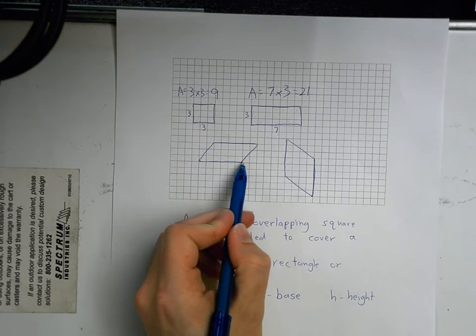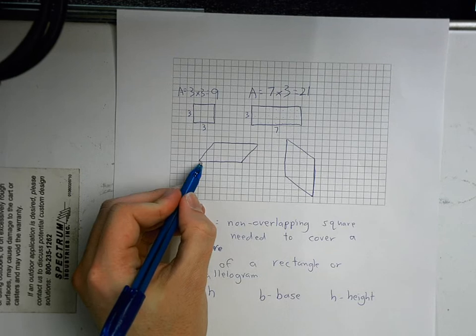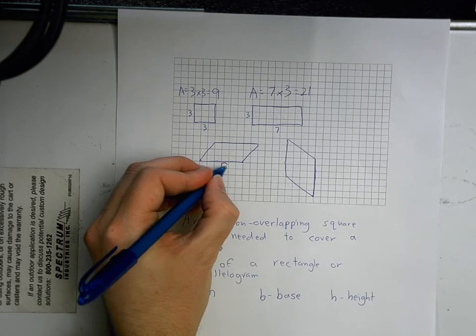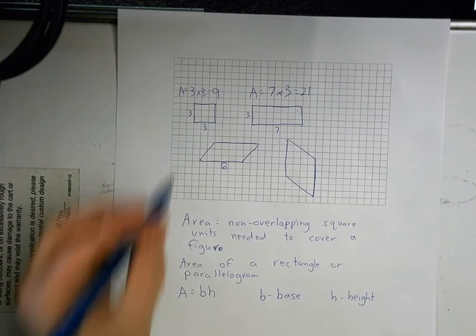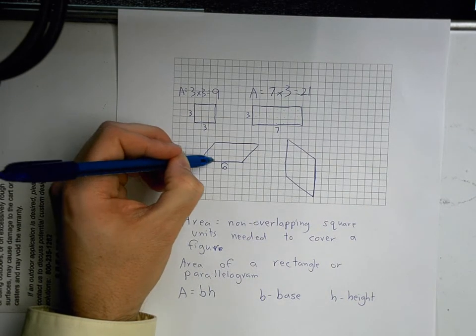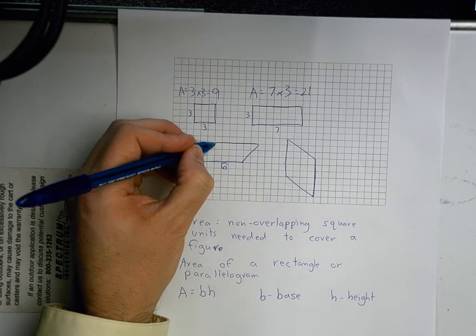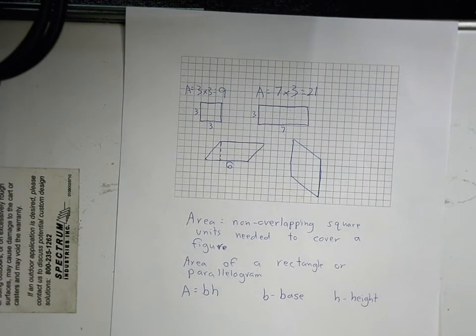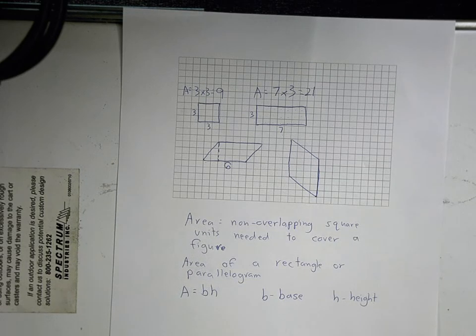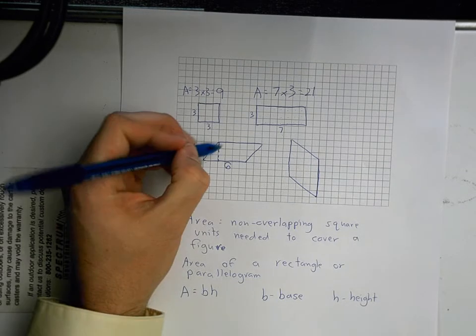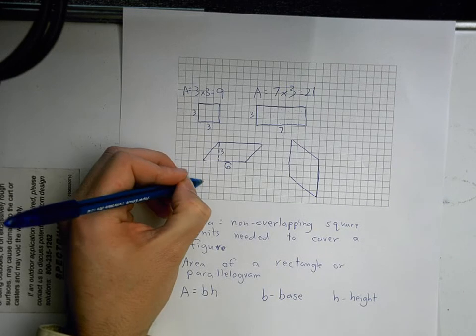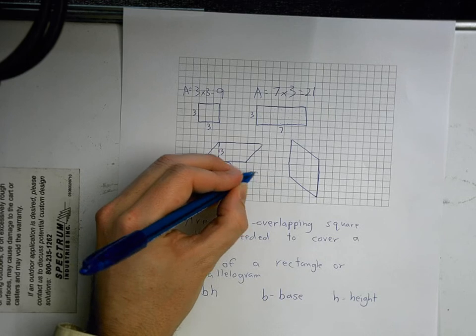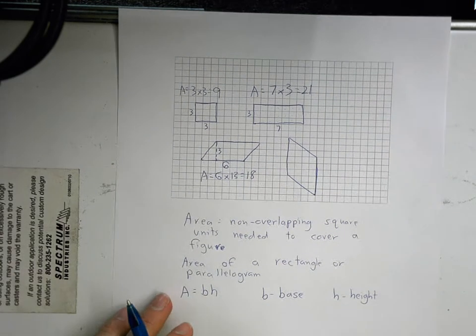My length is this straight line that's going right here. Or my base. One, two, three, four, five, six. And my height is the distance between these two parallel lines right here. Who can tell me what my height's going to be on this one? What's my height going to be? Fernando. Three. Three, yeah. Cause there's three units in there. So my area equals six times three, and that's 18. Okay.